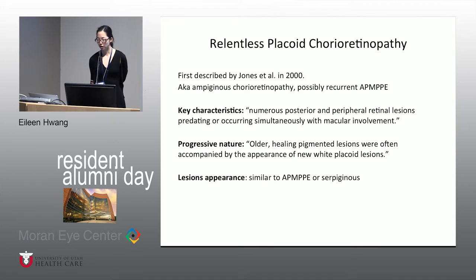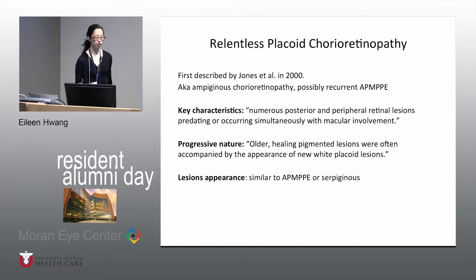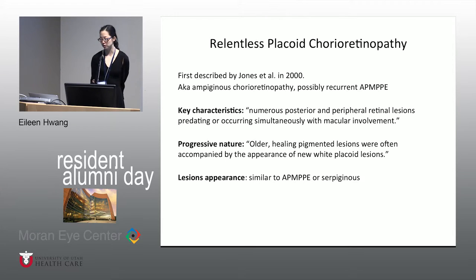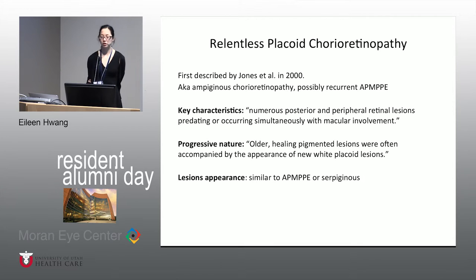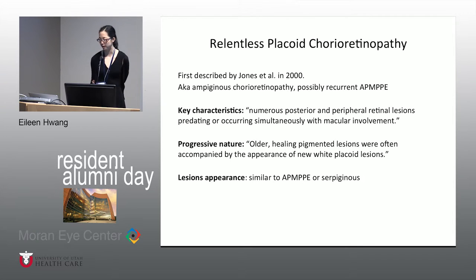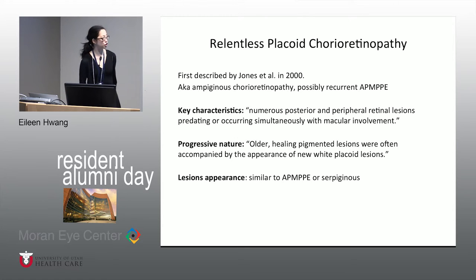Key characteristics of relentless placoid are posterior and peripheral retinal lesions that occur before or simultaneously with the macular lesions. It's also a progressive disease in which, if untreated, you can see older healing pigmented lesions together with new active lesions that have hazy borders and don't have that hyperpigmentation. The lesions can look similar to both AMPI and serpiginous, and the disease shares characteristics of both.